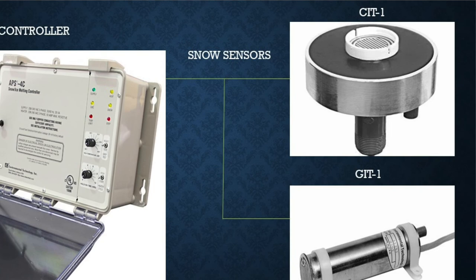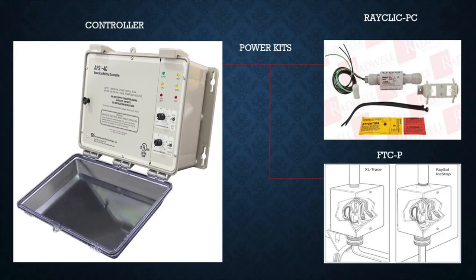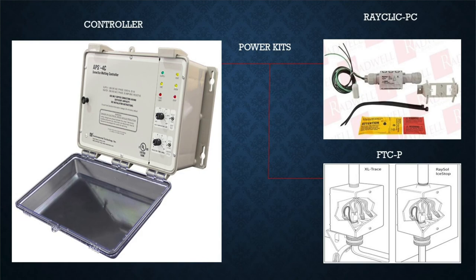The CIT sensor must meet two criteria to energize: temperature at or below 38°F and moisture present in the cup. The second sensor is a GIT — a gutter sensor — which also requires 38°F or below with moisture on the sensor before energizing the controller. From the controller you run to a power connection kit. The main options include the right-click PC for familiar installations and a heat-shrinkable weatherproof option called the FTC-P. An end seal — the right-click E — is used at the cable end.